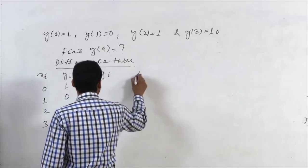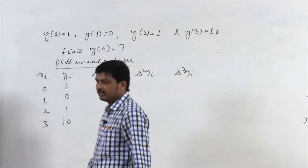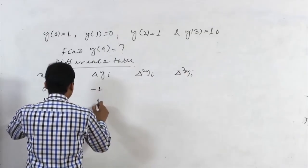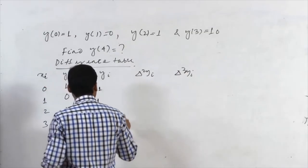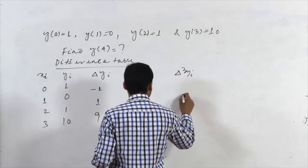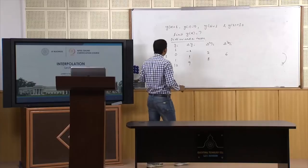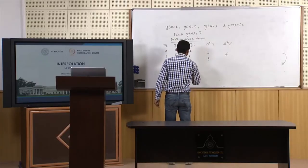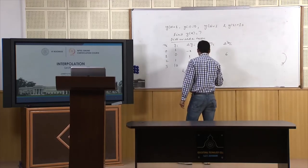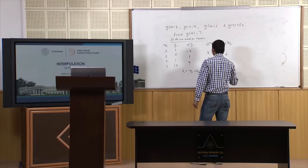Computing the difference table: ΔY values are −1, 1, 9; Δ²Y values are 2, 8; Δ³Y = 6. The spacing H = xᵢ − xᵢ₋₁ = 1, and it is asked to compute the value at x=4.